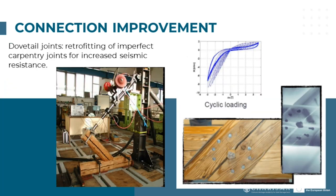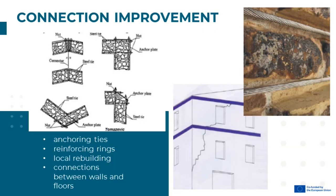Here is an example of a new resistant retrofitted joint that was built upon an old carpentry joint. The dissipative capacity of the dovetail joint was increased significantly by the appropriate placement of heavy-duty nails. Similarly, strengthening of connections can be provided by employing anchoring ties or reinforcing rings as shown in this slide. Local rebuilding can also help to increase the resistance of the joints.